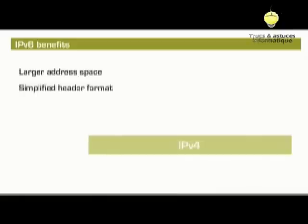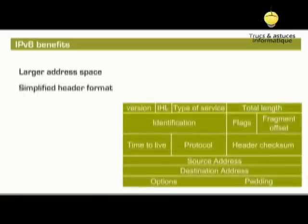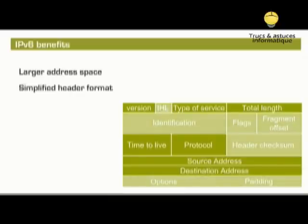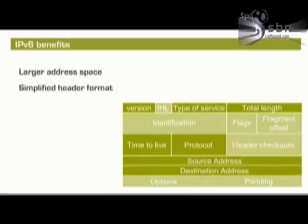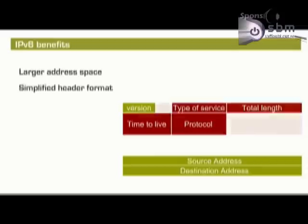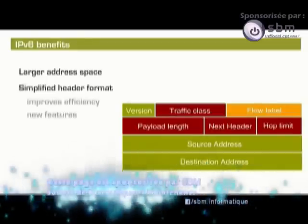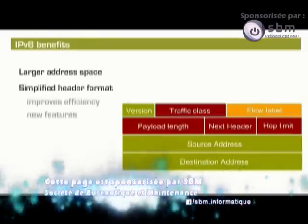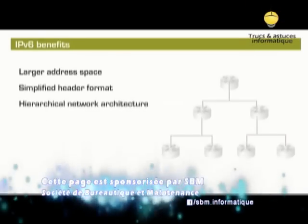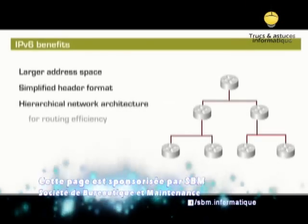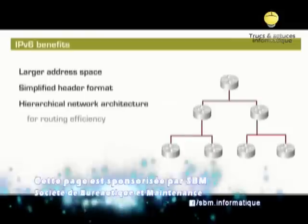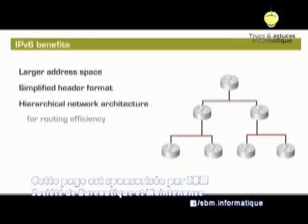Second, a simplified header format for efficient packet handling. Six of the 12 IPv4 header fields have been removed in IPv6. Some IPv4 fields have been carried over with modified names and some new fields have been added to improve efficiency and introduce new features. Third, a hierarchical network architecture for routing efficiency that follows some of the IPv4 CIDR principles.